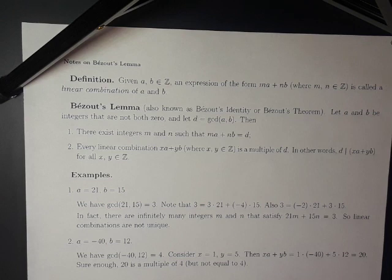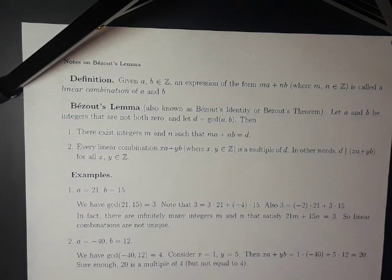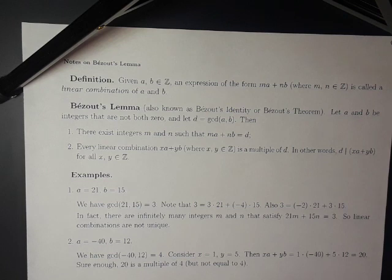Bezout's lemma, also known as Bezout's identity or Bezout's theorem, is as follows. Let a and b be integers that are not both zero, and let d be the GCD of a and b. Then first, there exist integers m and n such that ma plus nb equals d — in other words, there is a linear combination of a and b that equals the GCD. And two, every linear combination of a and b is a multiple of d — in other words, d divides xa plus yb for all integers x and y.